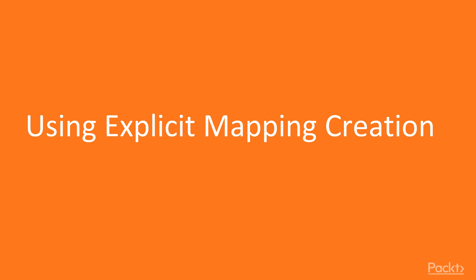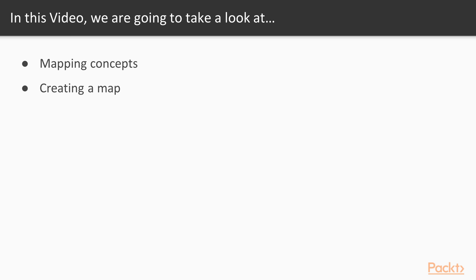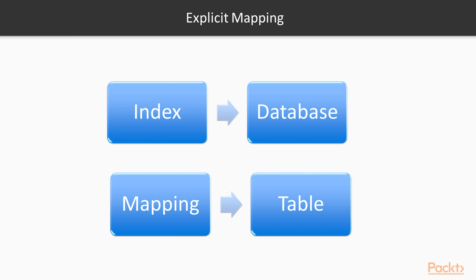Now we move on to the first video of this section that deals with explicit mapping creation. In this video, we are going to take a look at the mapping concept and creating a map. If we consider the index as a database in the SQL world, the mapping is similar to the table definition. Elasticsearch is able to understand the structure of the document that you are indexing — that is, it can reflect and create the mapping definition automatically, which is explicit mapping creation.